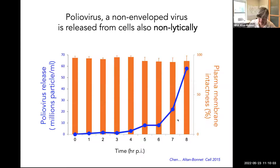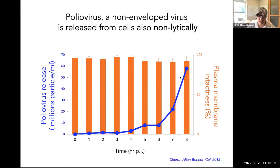Another virus we've been studying quite heavily for the past 10 years is a non-enveloped virus: poliovirus — just a capsid, no membrane around it. Remarkably, this virus also leaves cells without lysis. If you think about the topology, how is this virus coming out of cells without lysing, given that it doesn't have an envelope on it? But it does — and in tissue culture you see poliovirus releasing from the cell over the course of infection while there's no change in plasma membrane permeability.